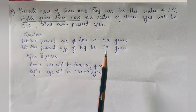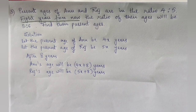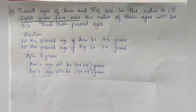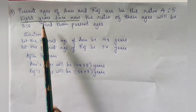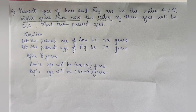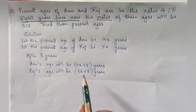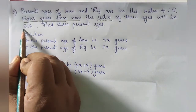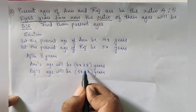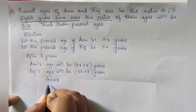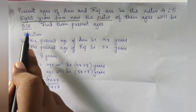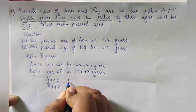We now have their present ages — 4x and 5x — and their ages after 8 years: 4x + 8 for Anu and 5x + 8 for Raj. The next condition is: 8 years from now the ratio of their ages will be 5:6, meaning (4x + 8) ÷ (5x + 8) = 5/6.